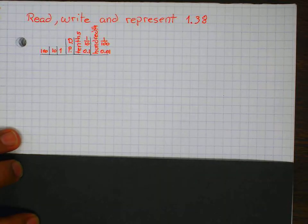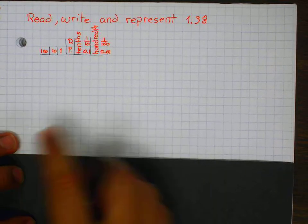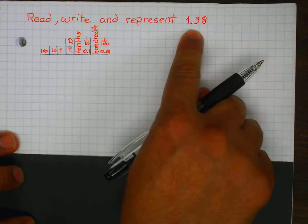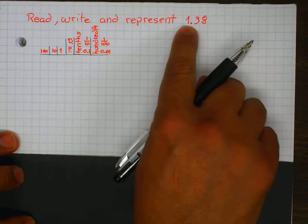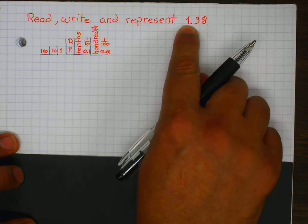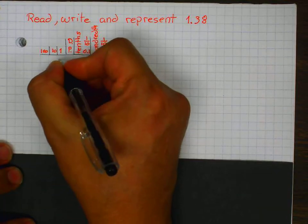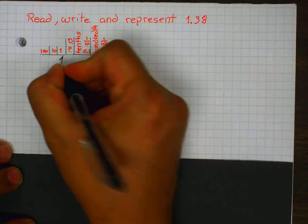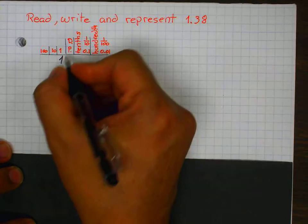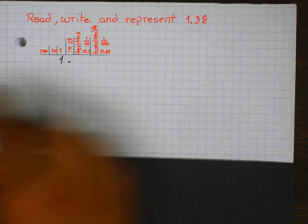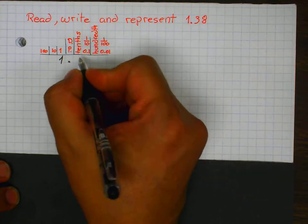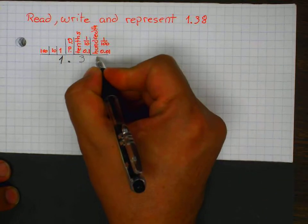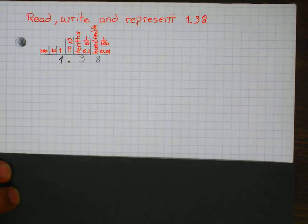The first thing I'm going to do is write the number in the correct place value. The one represents one whole, which means that it goes in the ones place. The decimal point goes here, and 38 hundredths — each digit goes in the correct place value. This is how I write my number in the correct place value.